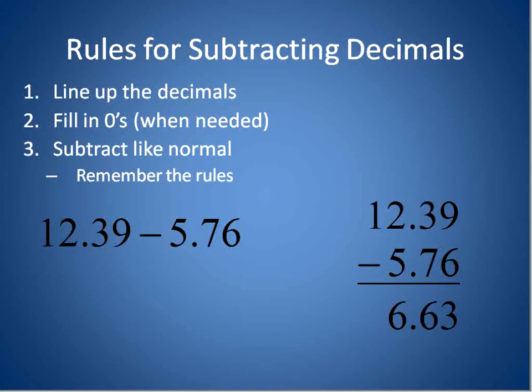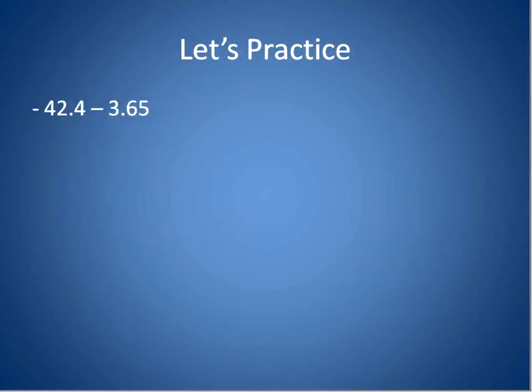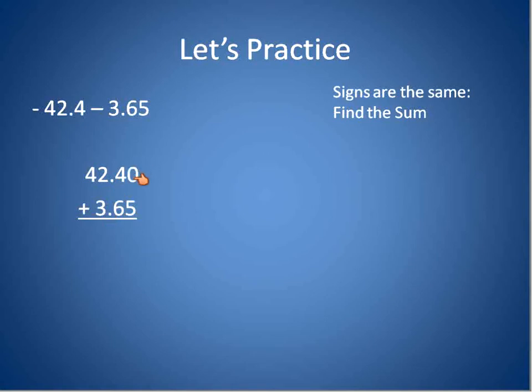Now we're going to look at some more complicated questions where we have to decide what to do. This one here I have negative 42.4 minus 3.65. If the signs are the same, I'm going to find the sum. In other words, I'm not going to subtract these two numbers. I'm actually going to add them together. Because the signs are exactly the same. I'm going to line up my decimals. Fill in a zero where needed. And now I'm just going to add these up. Zero plus five is five. Four and six is ten. Carry the one. That will give me 46.05.